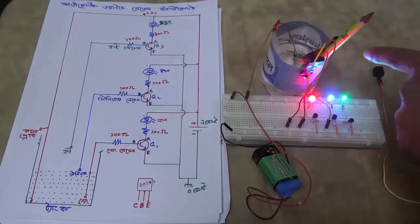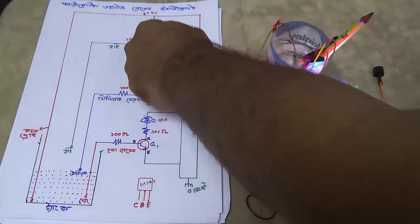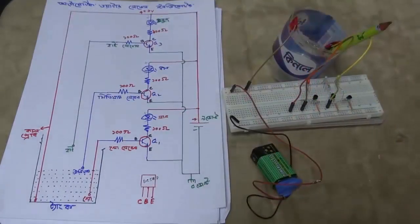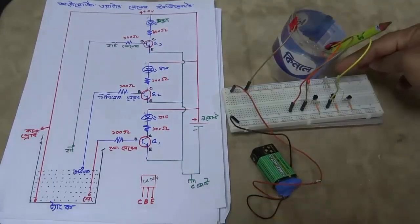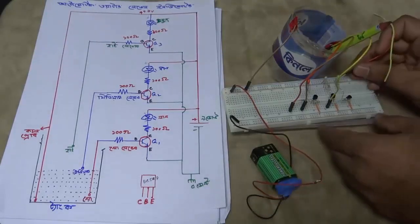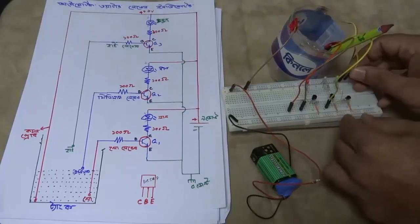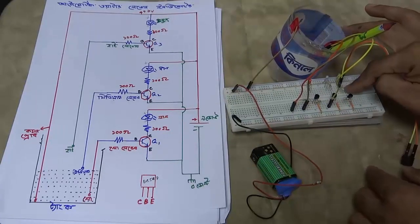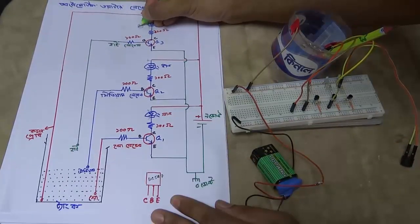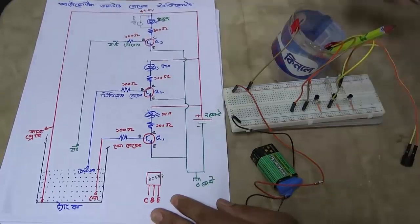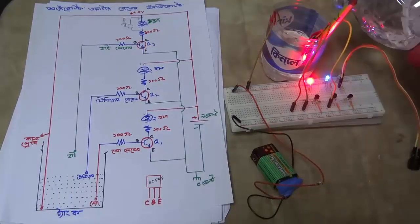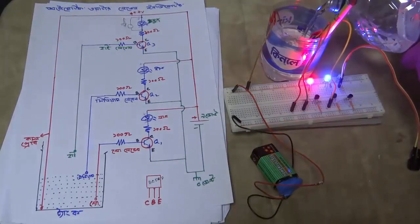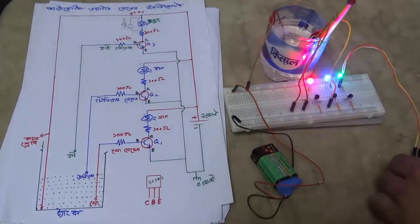When the water level is high, the transistor activates and a valve can be connected. When the water level is high, the power can be used to trigger the valve. We can connect this valve in parallel. Let's demonstrate: low level, medium level, high level — all levels are shown working.